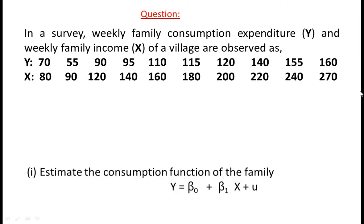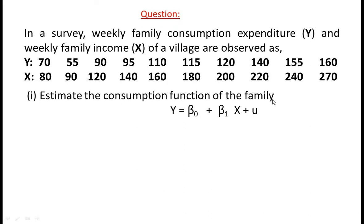Estimate the consumption function of the family: y = β₀ + β₁x + u, where β₀ is the intercept parameter representing autonomous consumption, β₁ is the slope parameter representing marginal propensity to consume, and u represents the random variable.